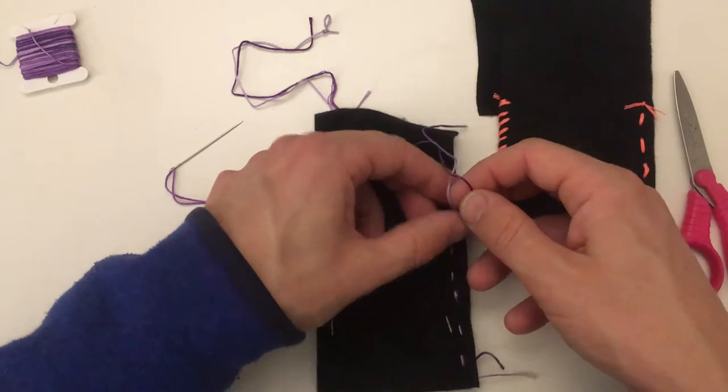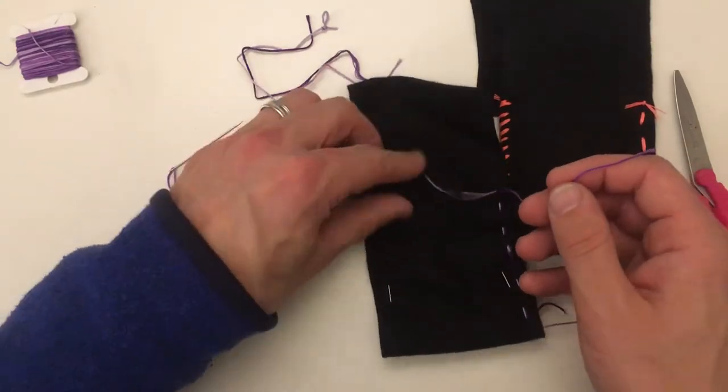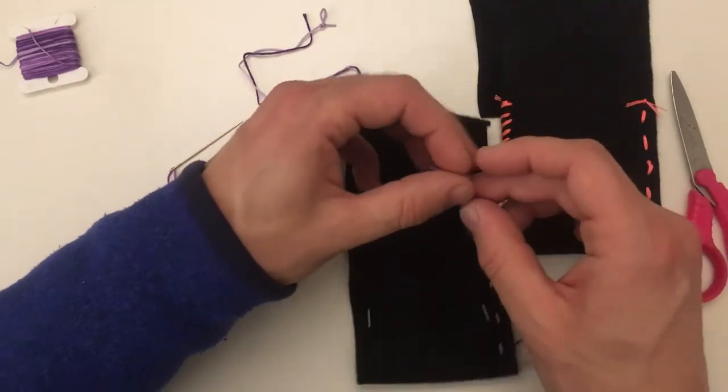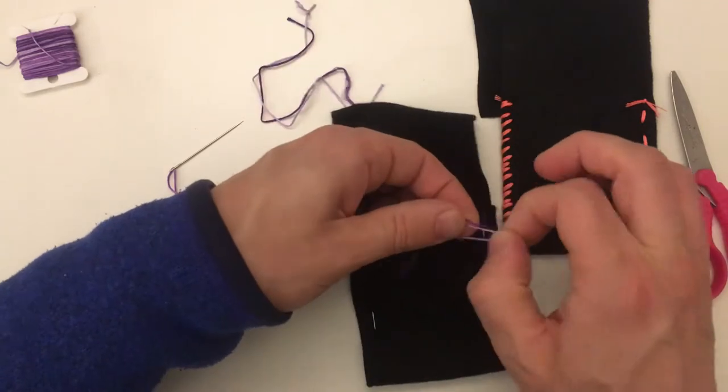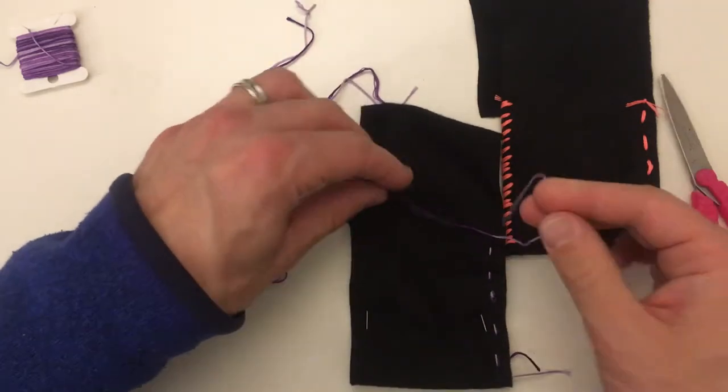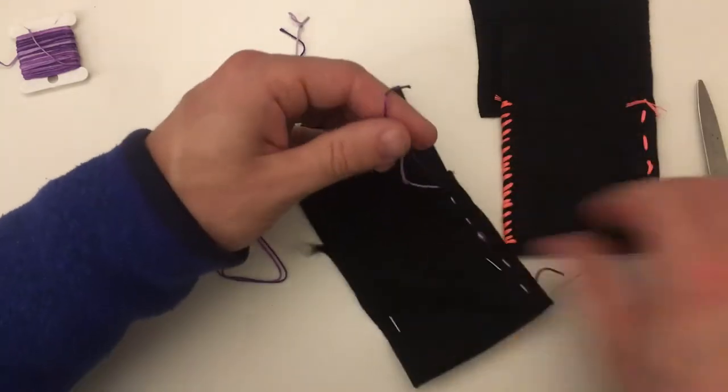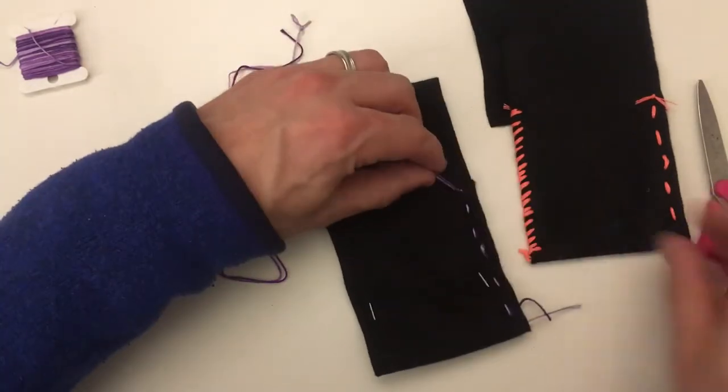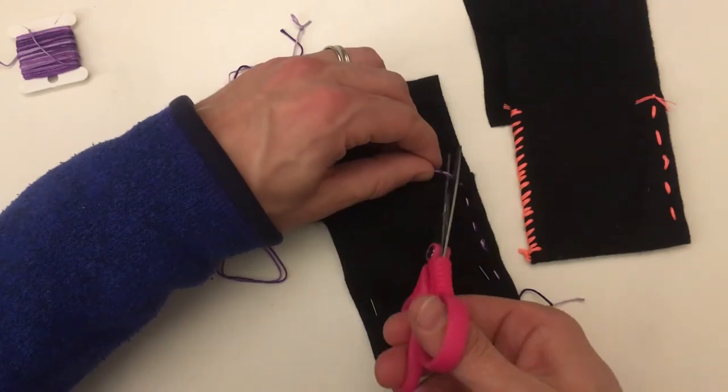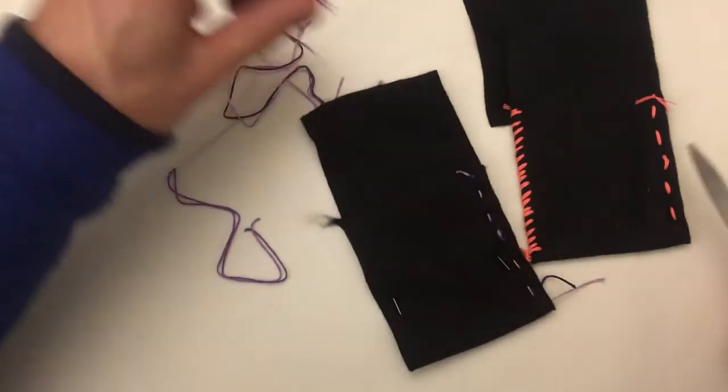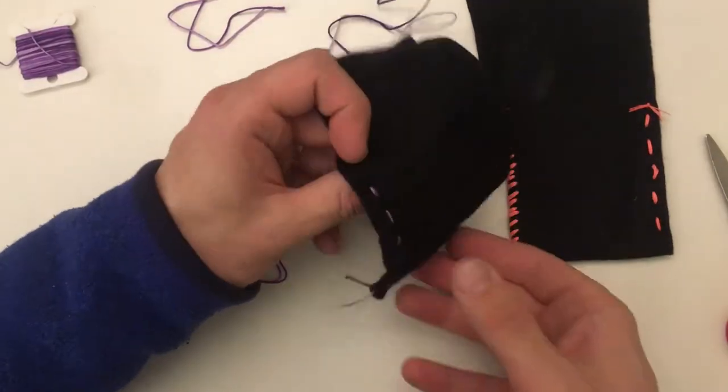Take your two ends like you're tying a shoelace. You do one knot, and then you're going to do it again. And then you trim those off. And you've got your straight stitch done.